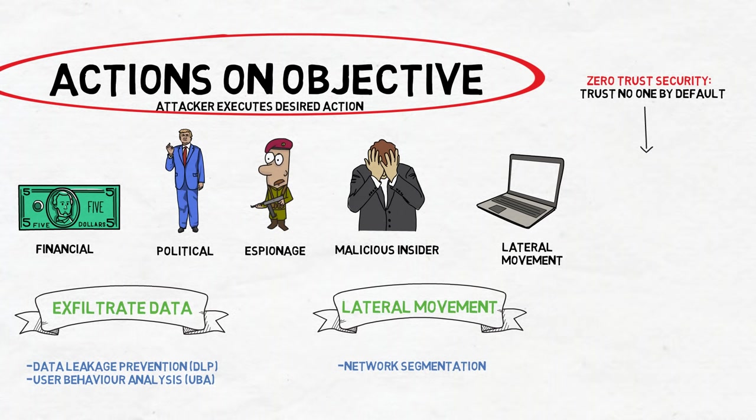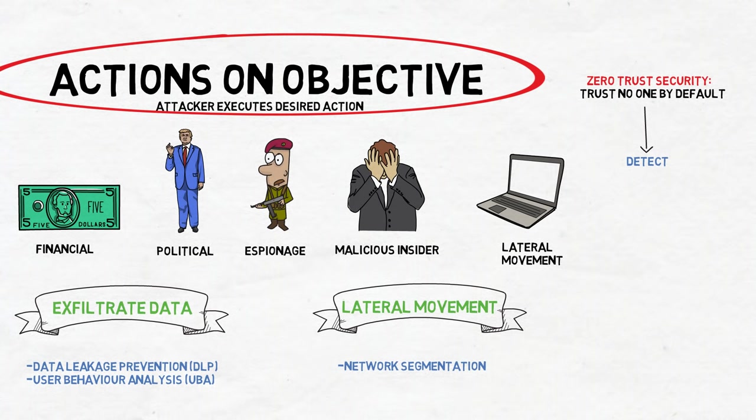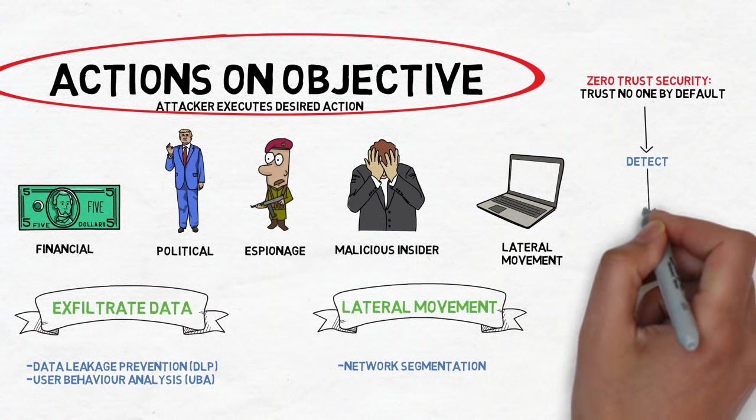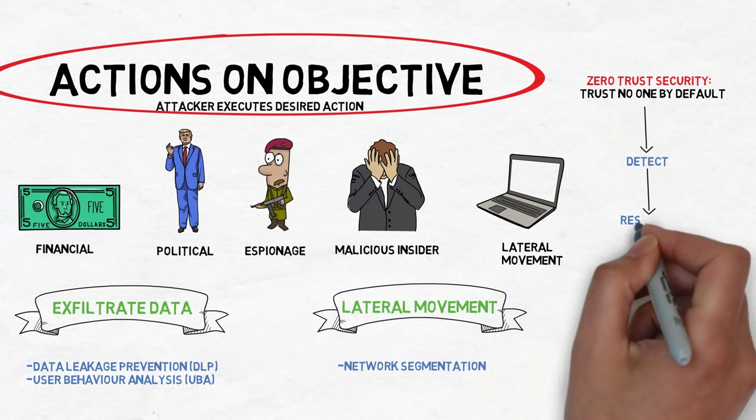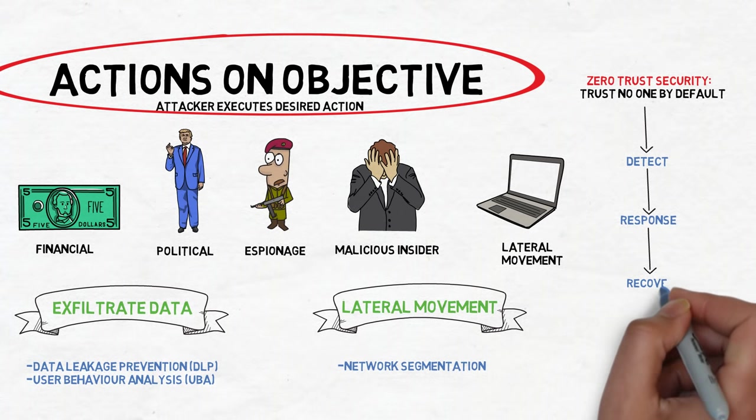While we won't go into detail of the Zero Trust Security Model, this model is very effective at detecting infected machines and limiting the damage that can be done by the attacker. Once a compromised machine is identified, you can begin your incident response planning and eventually re-image the system before putting it back on your network.